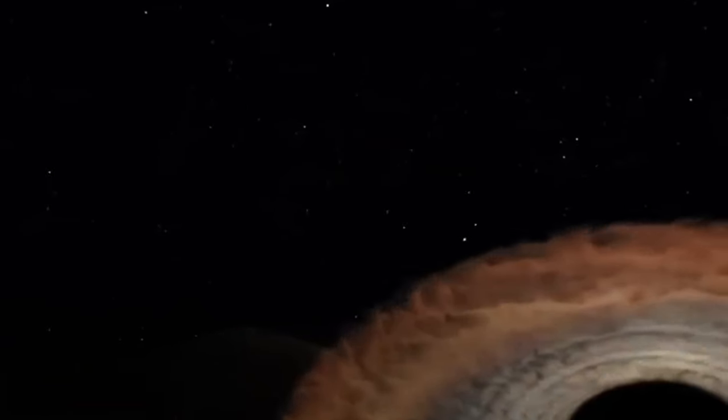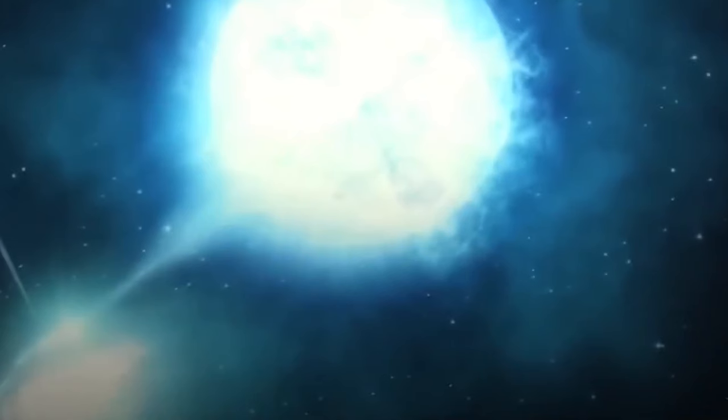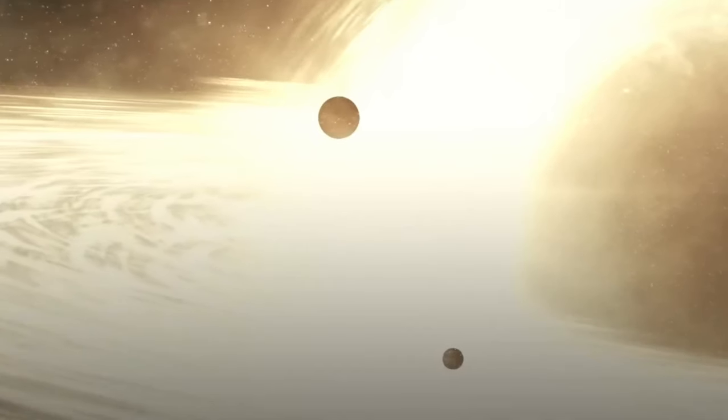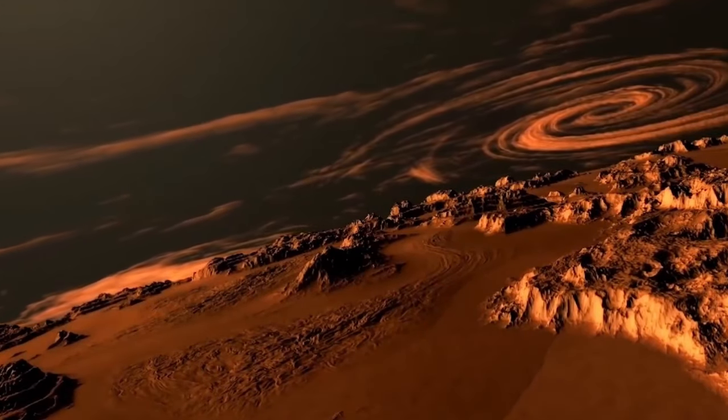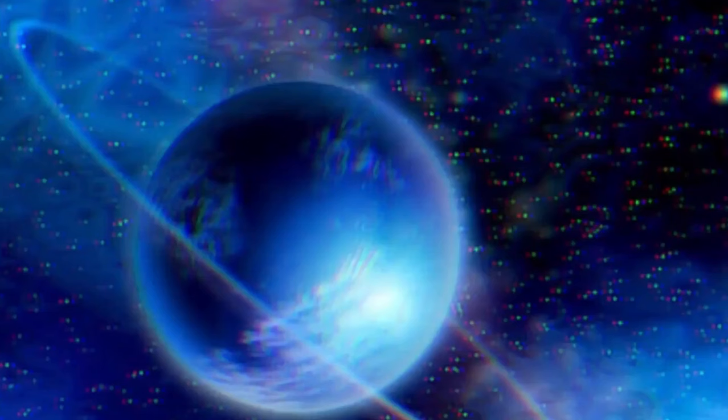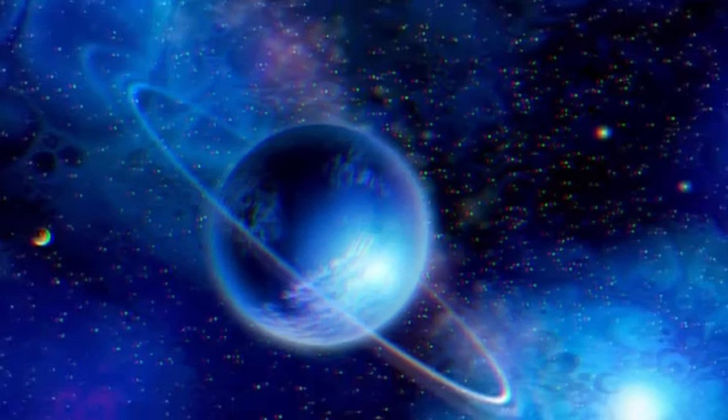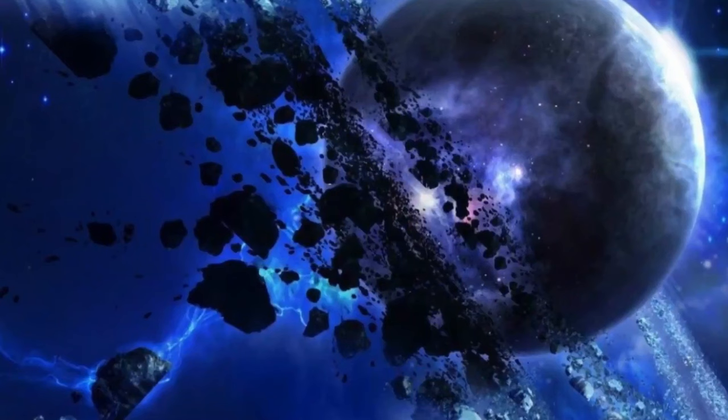As you gaze at Neptune and Triton in this awe-inspiring wide-angle view, everything else in the picture is a background galaxy, possibly hundreds of millions or even billions of light-years away. This serves as a poignant reminder that Neptune is the solar system's ultimate major outpost.